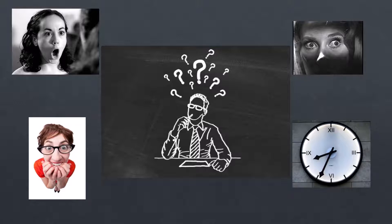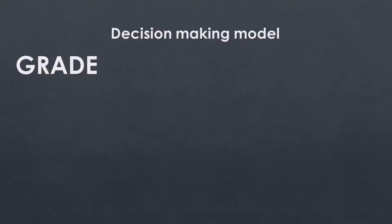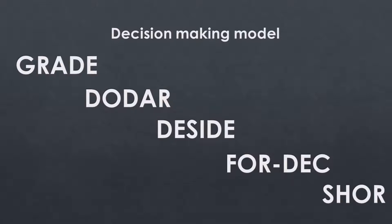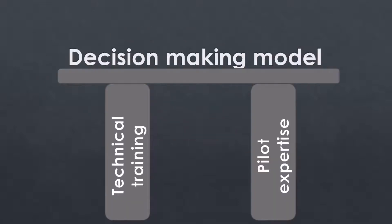To carry out this process of making a good decision, decision-making models have been created that are a guide that helps to consider the most important aspects of a given problem. There are several models in the aeronautical world; they are all acronyms whose letters represent a step in the process. These models can assist flight crews; however, they must have good technical training and pilot expertise to function properly.